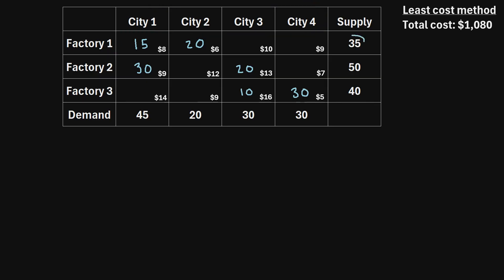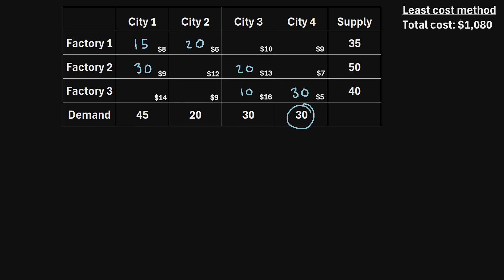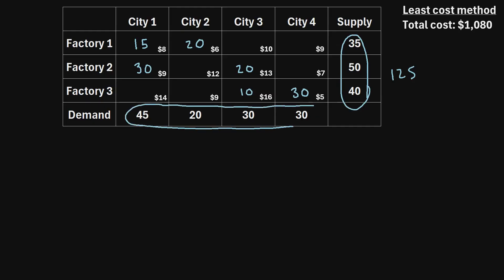Factory one produces a total supply of 35 units, factory two produces a supply of 50, and factory three produces a supply of 40. City one has a demand of 45 units, city two has a demand of 20, city three has a demand of 30, and city four has a demand of 30. The total supply is 125, and the total demand is also 125, so this is a balanced transportation problem — the demand is equal to the supply.